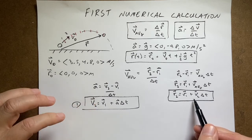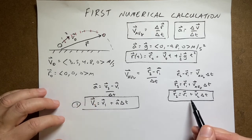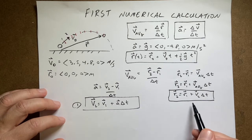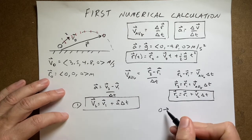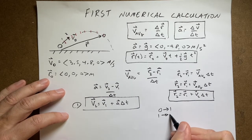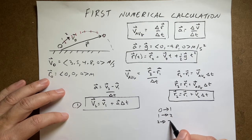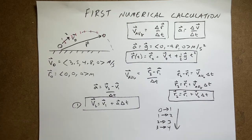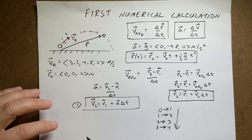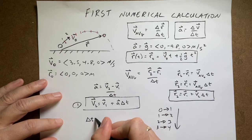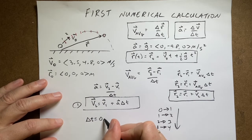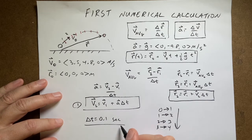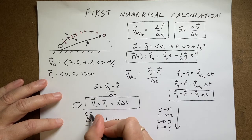I'll do this iteratively: step 0 to 1, then 1 to 2, then 2 to 3, and so on — keep going forever. The question is how big should delta_t be? Let's start with delta_t = 0.1 seconds — that's small — and start at t = 0. I'll do all these calculations first by hand, then with a computer, and compare.